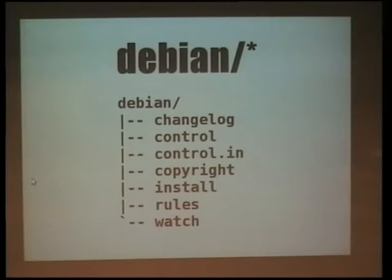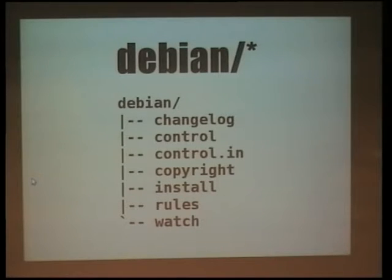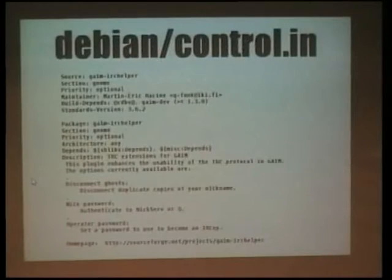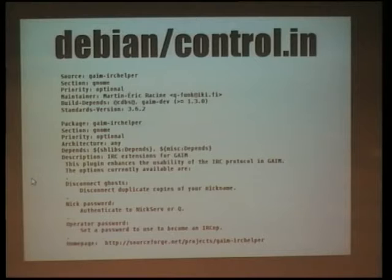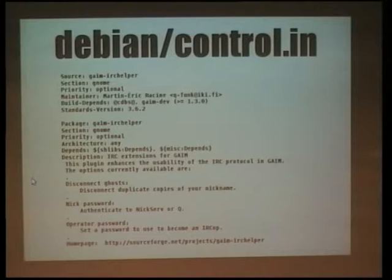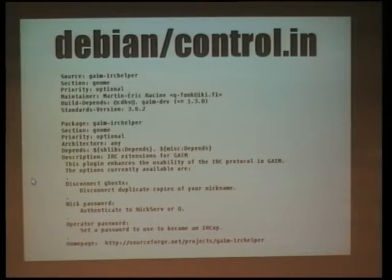Those were the four minimum files, but there are more options. In this case for another package example I have one file called 'control', one called 'install', and another called 'watch'. You'll notice it's almost the same control file as before. The only difference is on the build-depends line — there is a bit with CDBS between two at-marks, which means the exact version of CDBS I use will be dynamically replaced by CDBS itself so I don't have to worry about remembering what I last used. It's a very useful trick for binary packages that need to be compiled.